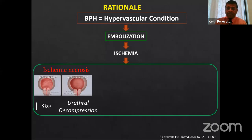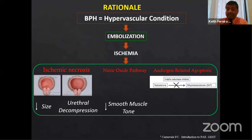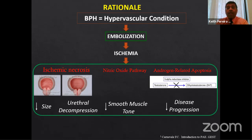The difference from UFE is that PAE's clinical effect is much quicker. With UFE you wait about three months for improvement; with PAE you can see symptom improvement sometimes two to three weeks after the procedure — it's dramatic. There's also another theory: ischemia causes release of nitric oxide, causing vasodilation and decreased smooth muscle tone in the prostate, which improves urine flow. Another theory involves apoptosis and death of androgen-related receptors, creating a hormonal effect that decreases disease progression.